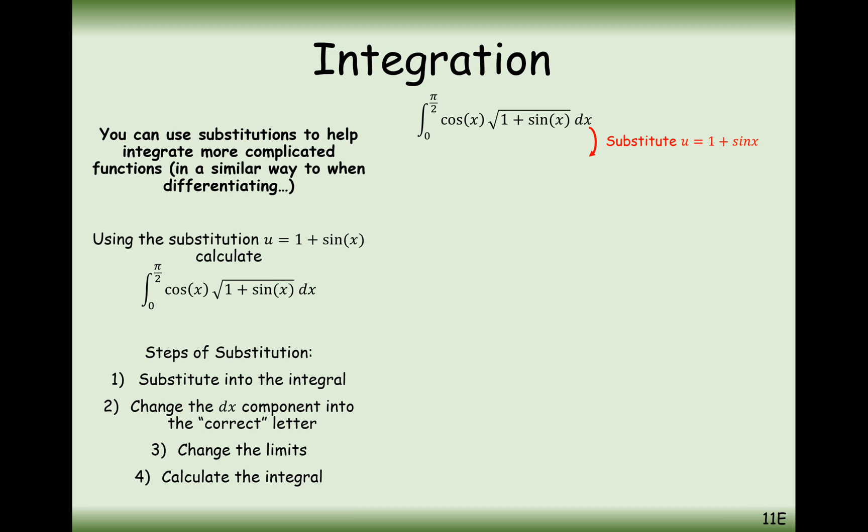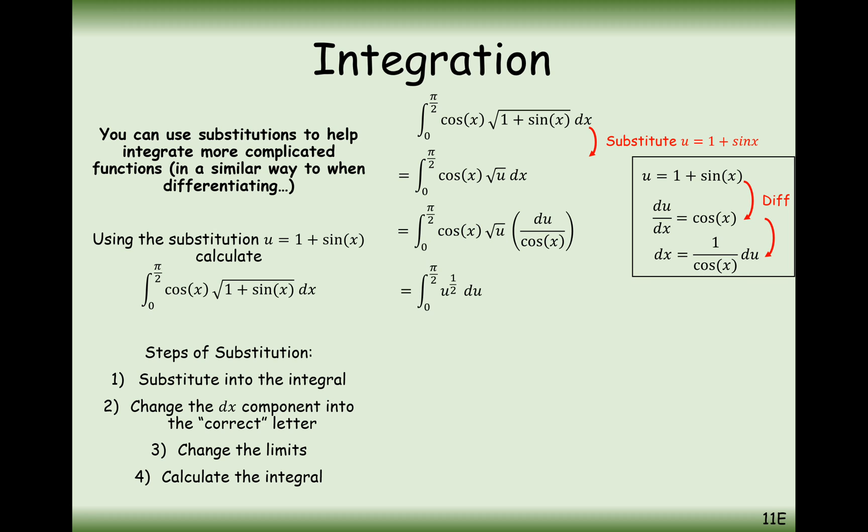Let me show you what I mean by this. First things first, obviously it's substitute u in. u is 1 plus sin x, so u will be in that square root. Then we'll replace the dx, so differentiate your substitution, and we've got 1 over cos x du. So those cos x's will cancel each other out.